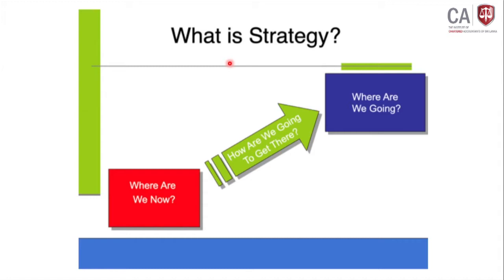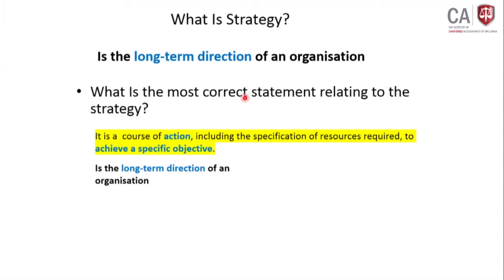Strategy is like this: first of all, we have to identify where we are — where we stand and where we are now in the organization. Second, where are we going to be? Let us say within a 5-year duration, you want to be one of the best companies in Sri Lanka. And third, how are we going to get there — the actions we are going to establish in our organization to reach that stage. Strategy is the long-term direction of an organization.